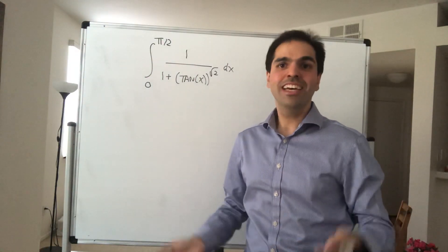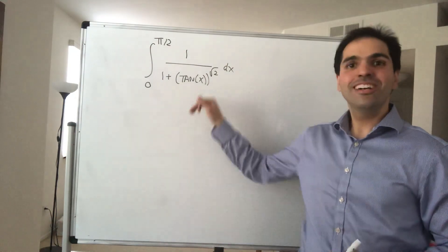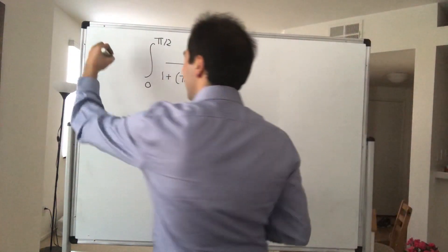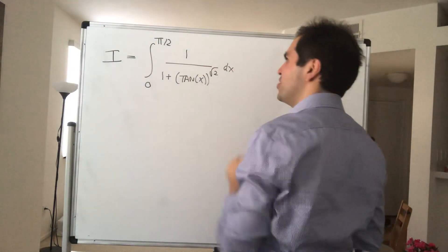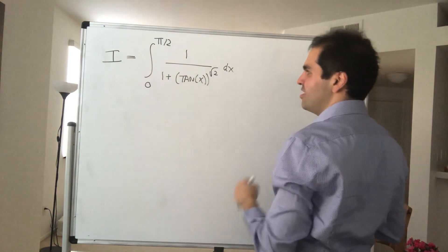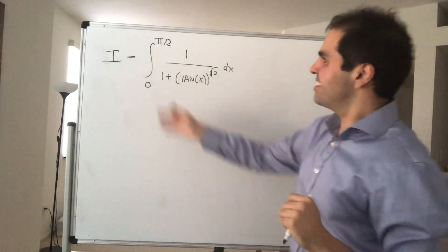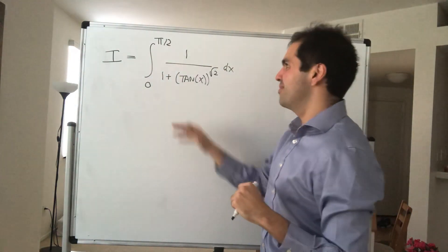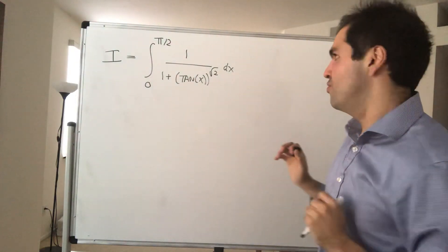Thanks for watching. I feel I haven't done integrals in a while, so here's an integral that my friend Sho suggested, and it's very neat. It's an integral from 0 to π/2 of 1 over 1 plus tangent of x to the square root of 2. That's a nice integral that we'll solve with the naming technique. Call this I, and find an equation for I.